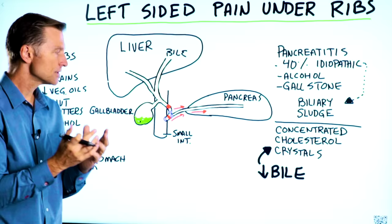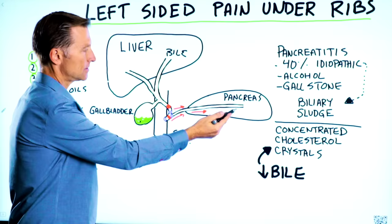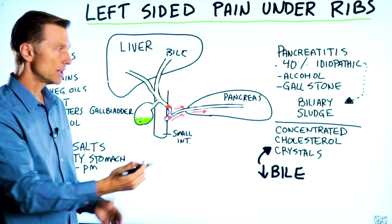You also have a pancreas that makes enzymes. Especially when you're dealing with fats, the pancreas releases an enzyme called lipase, which helps break down the fats. But there are other enzymes as well that are created by the pancreas and secreted.